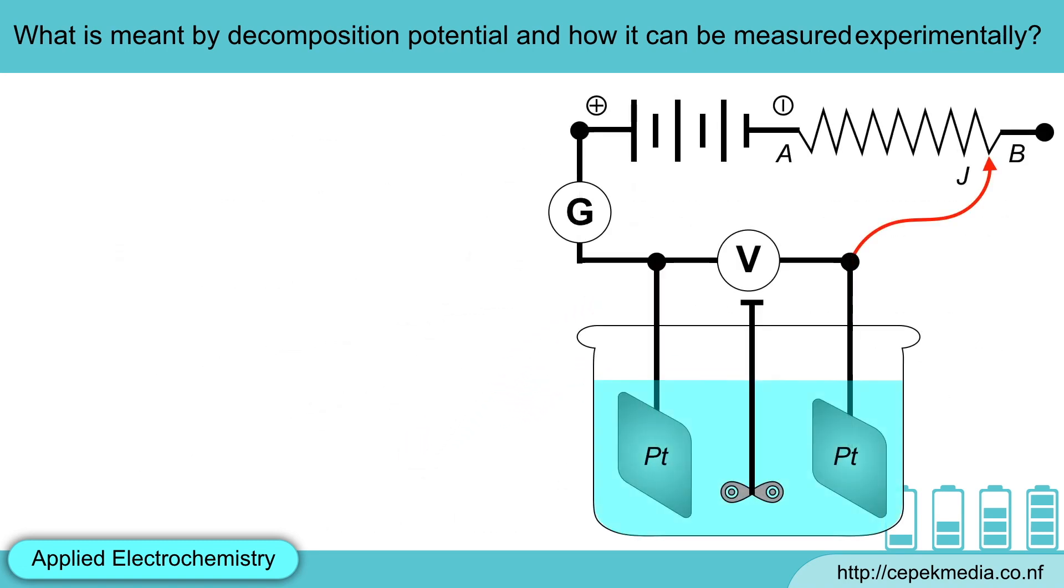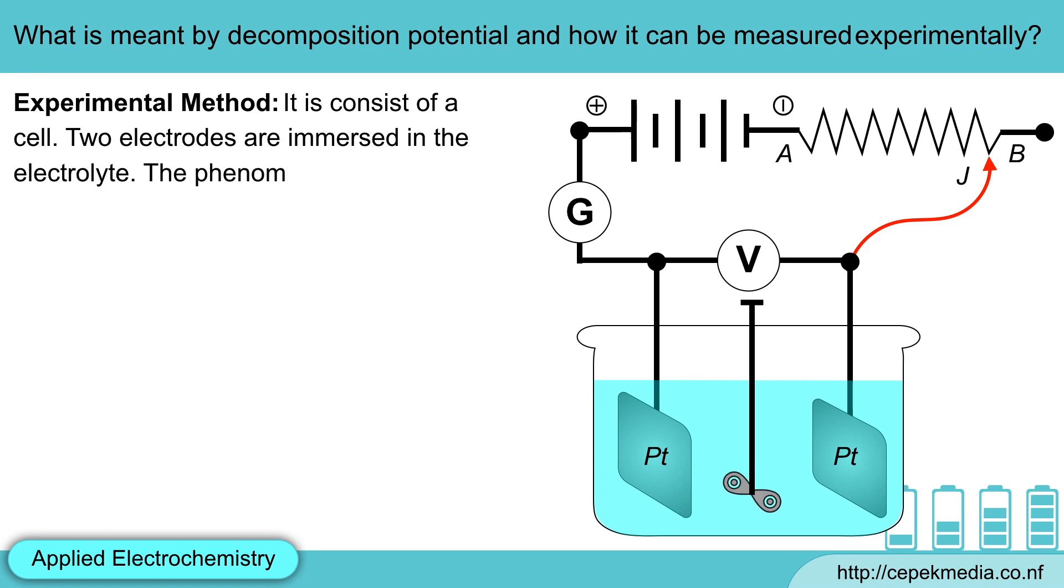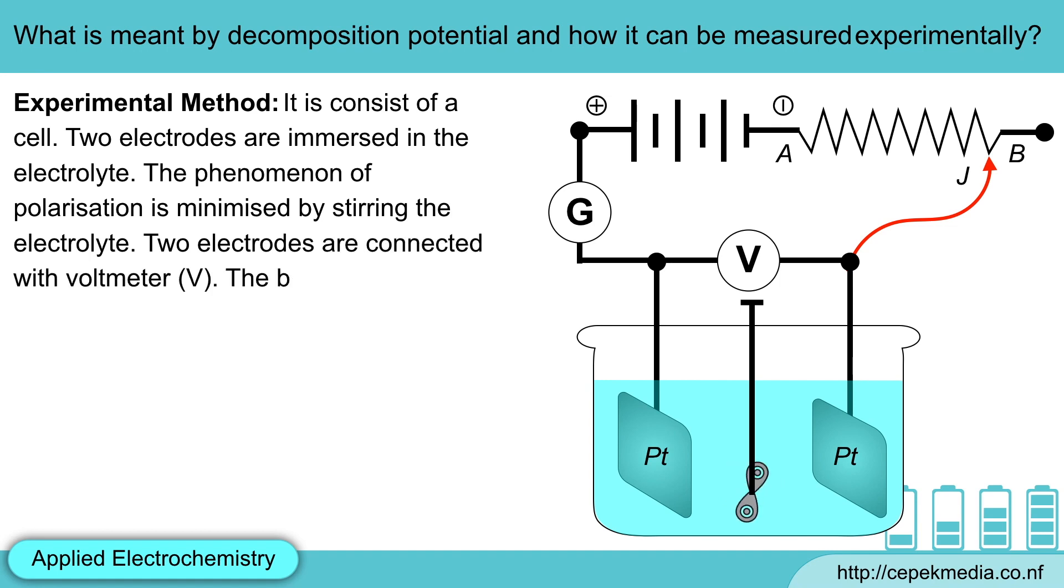So, the experimental setup to measure the decomposition potential is shown here, which is consist of a cell. Two electrodes are immersed in the electrolyte. The phenomena of polarization is minimized by stirring the electrolyte. The two electrodes are connected with voltmeter V. The battery and variable resistance A-B is connected across the two electrodes.